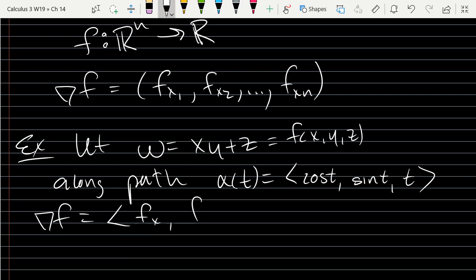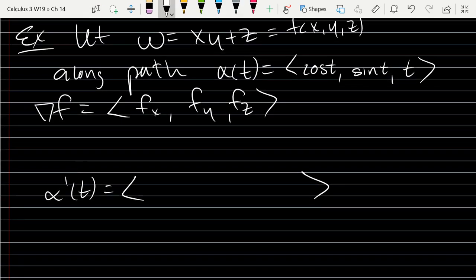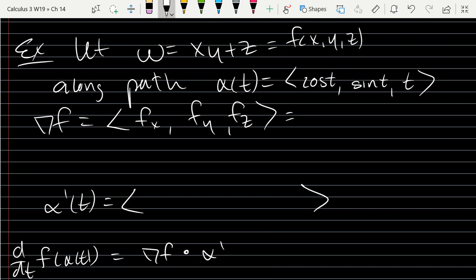So this is going to be fx, fy, fz. And then also compute α prime of t. So compute these two right now, and then take their dot product. So we're taking the t derivative, which will be gradient f dot α prime.